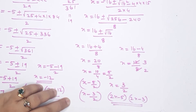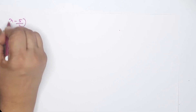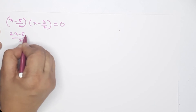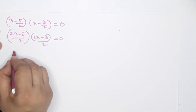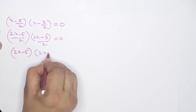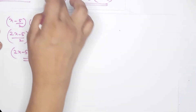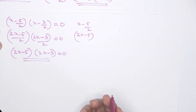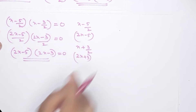These are the two factors. Writing them properly: (x - 5/2)(x - 3/2) = 0, which equals (2x-5)/2 × (2x-3)/2 = 0. So the factored form is (2x-5)(2x-3).